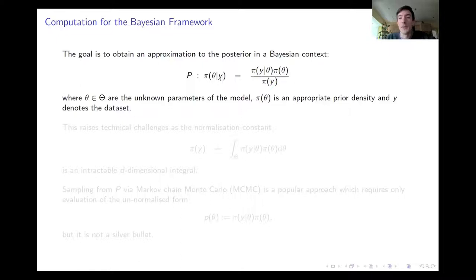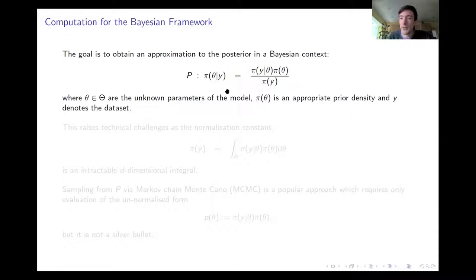The famous Bayes theorem expresses this posterior probability density in terms of three other quantities: the probability density of the data given the parameters, a prior probability of the parameters, and a marginal likelihood. The role of the marginal likelihood is to normalise this probability density function on the left-hand side. I'm not going to talk about where the prior distribution comes from or how we come up with the likelihood — these are other aspects of statistical methodology.